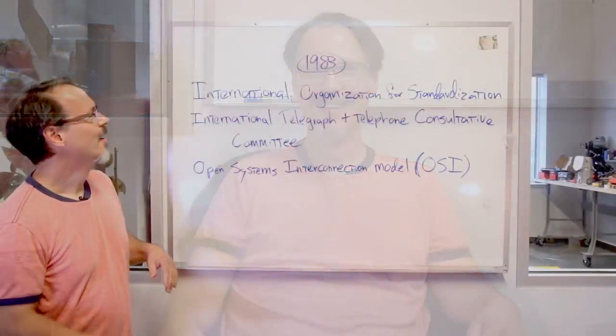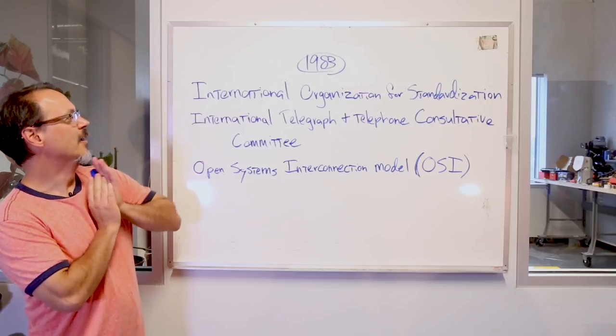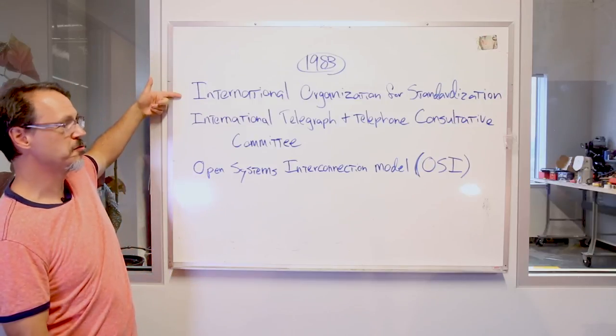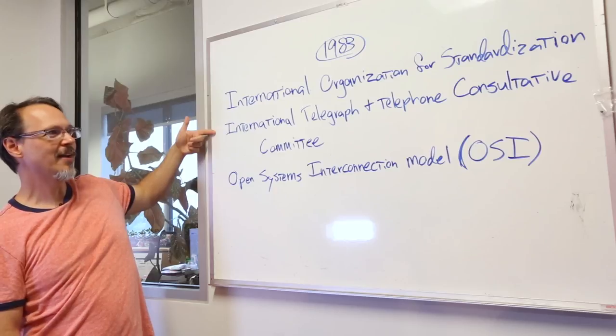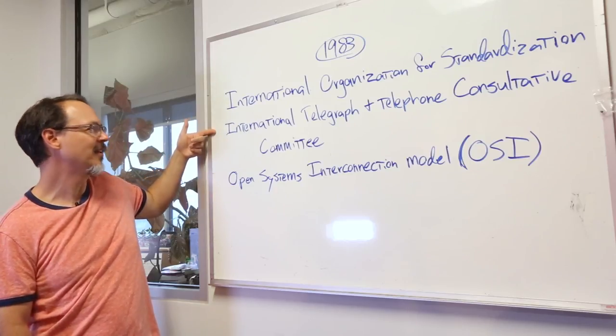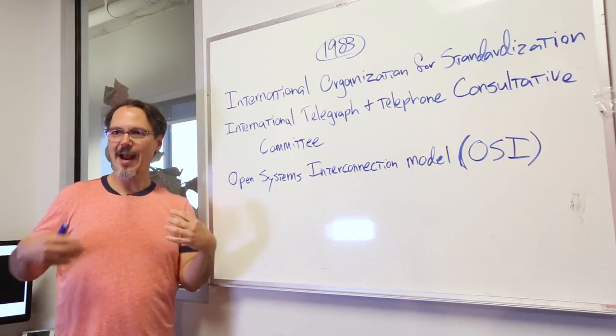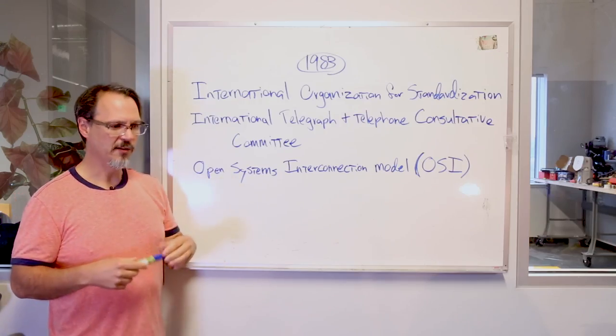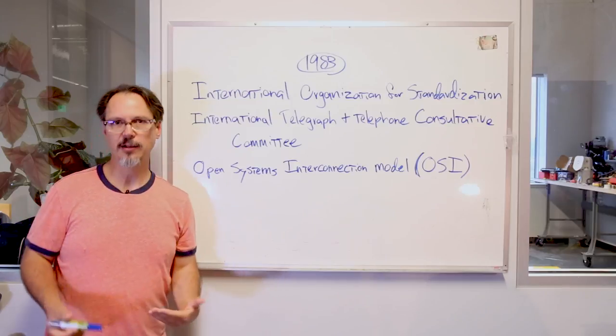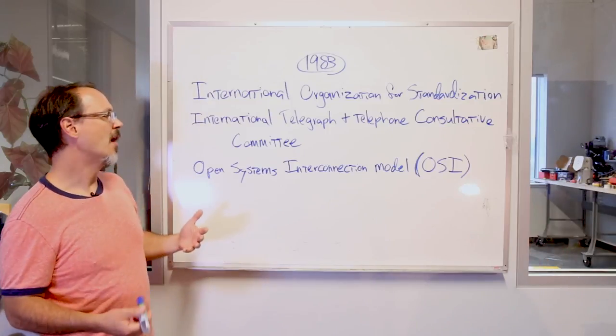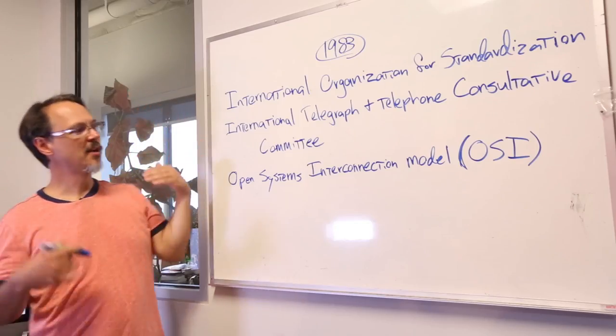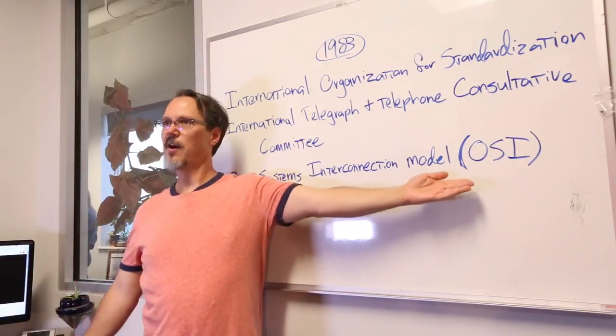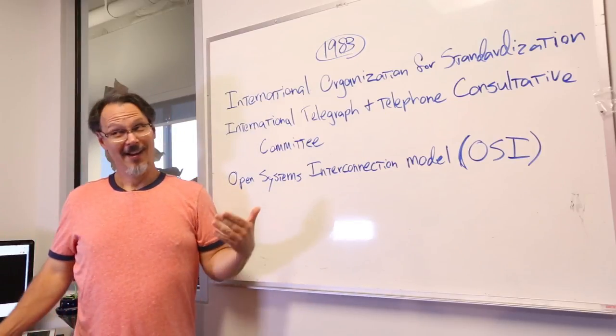Okay so first some history. In 1983 two different groups working independently, the International Organization for Standardization and the International Telegraph and Telephone Consultative Committee, were working independently and they created similar documentation around creating a network standard that would operate independently of any underlying hardware. In 1983 these two independent projects were combined into what became the Open System Interconnection model or the OSI model.